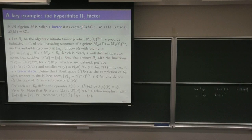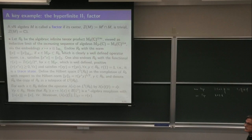A von Neumann factor is a von Neumann algebra whose center — that's the set of elements in M that commute with all elements in M — the intersection M prime ∩ M is trivial, meaning it's just the scalar multiples of one.